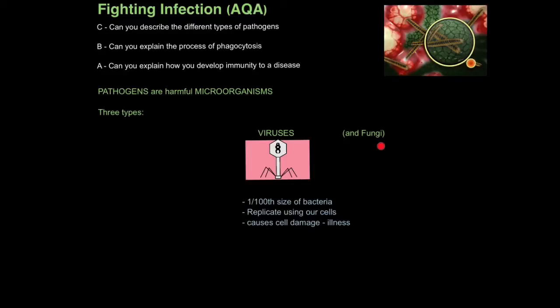The second type is fungi, but you don't really need to know much about those. And thirdly, viruses. Viruses are about a hundredth the size of a bacteria cell. They actually require our cells to reproduce, so they replicate using our cells, which is why they are not technically living. And they cause damage to our cells, which is why we feel ill.